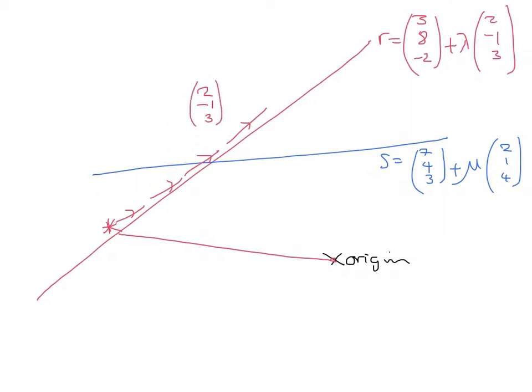Now from my picture, it looks like if I do about 2.7 lambdas, lambda is 2.7-ish, is 1, 2, 2 and a bit, then I'll reach this intersection point here.